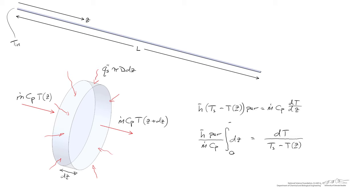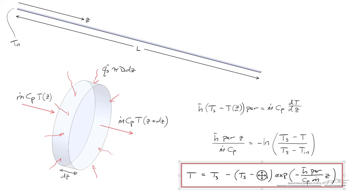Once we separate this equation, we'll integrate this from zero to some arbitrary value of Z. We'll integrate the temperature from the inlet temperature to some temperature T. Performing the integration, we're left with a negative natural log of this ratio, and when we rearrange that, we find this exponential relationship between the temperature and the position Z.